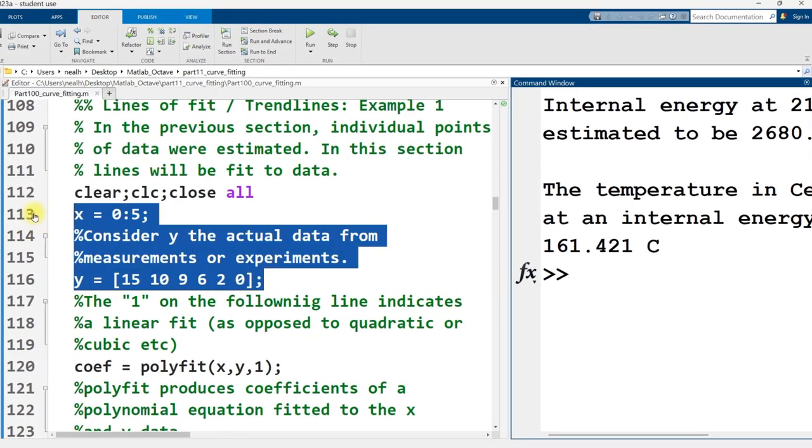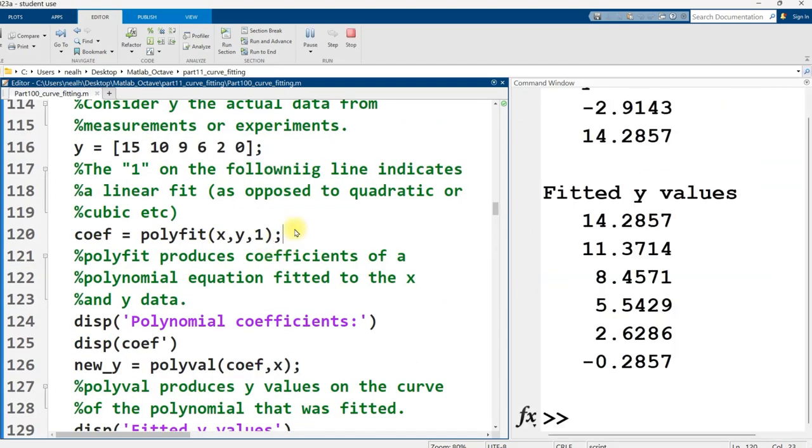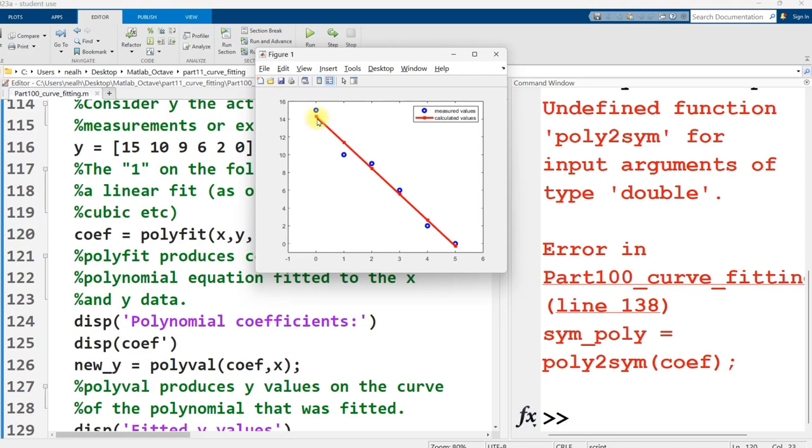In this example, I'm creating two vectors of values. We're going to consider this our experimental data, our measurements, the information we're working with. Of course, it's just numbers I made up, but that's what we're going to pretend. Ignore or fix any typos you find, like this one. Let me run this section. Here we have a graph - our blue circles are our data, and the red line is a line fitted to that data.